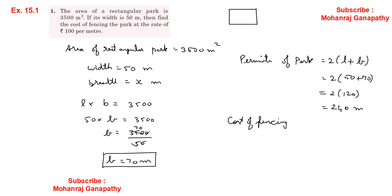Cost of fencing = 240 × 100 = 24,000. So the cost of fencing is Rs. 24,000.